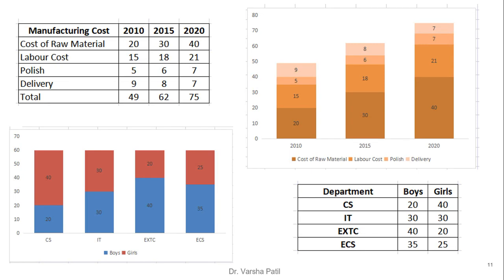For example, manufacturing cost is divided into four types: cost of raw material, labour cost, polish, and delivery, with data given for three years — 2010, 2015, and 2020. The totals are 49, 62, and 75 respectively. On the x-axis the years are shown, and the bar of total value 49 is divided into the four components. This allows easy comparison of raw material cost and all four parameters across the three years.